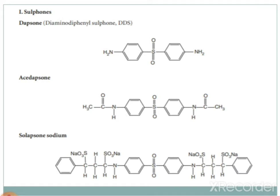The three basic sulfone derivatives are: first, Dapsone itself; second, acedapsone, which has an acetyl group at the NH₂ position forming an amide; and third, solapsone sodium, where the NH is substituted with SO₃Na and CH₂CH(SO₃Na)phenyl groups.